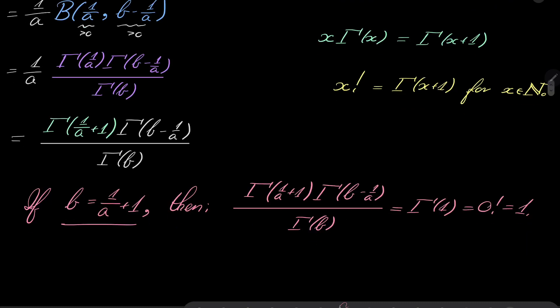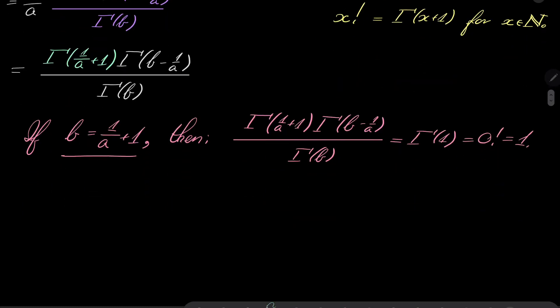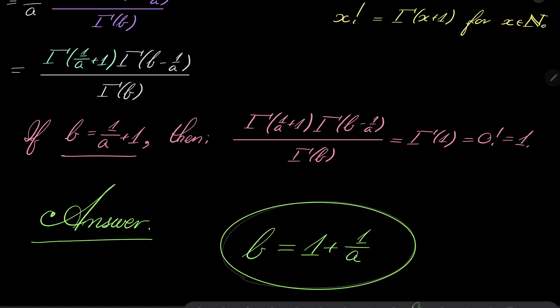We know there can be at most one solution, so our answer — the only answer — is b equals 1 plus 1 over a. This is the only number greater than 1 which satisfies our equation, and that closes our problem. Thank you very much for watching. I hope that you've learned something new this time. I will see you next time. Goodbye.